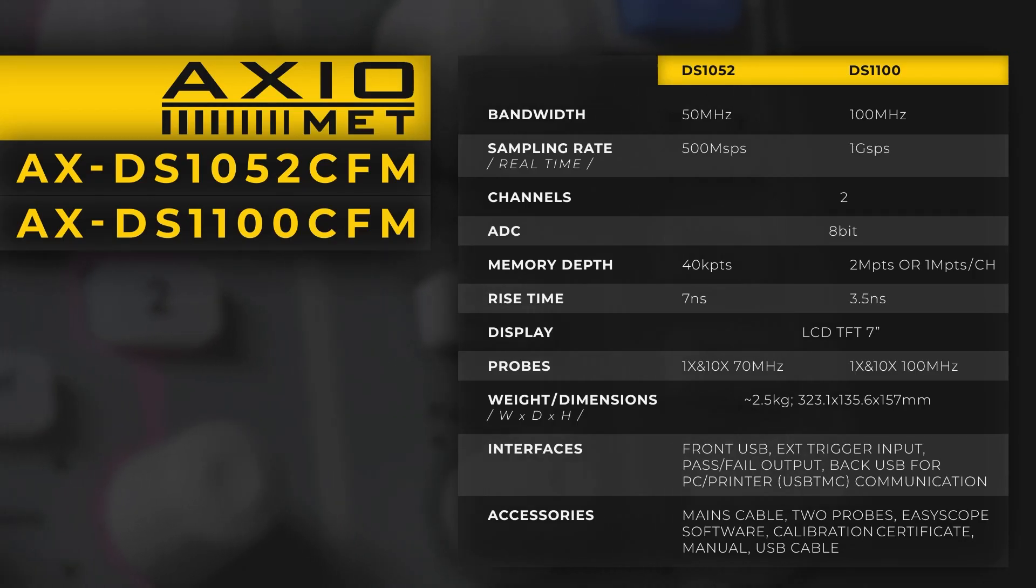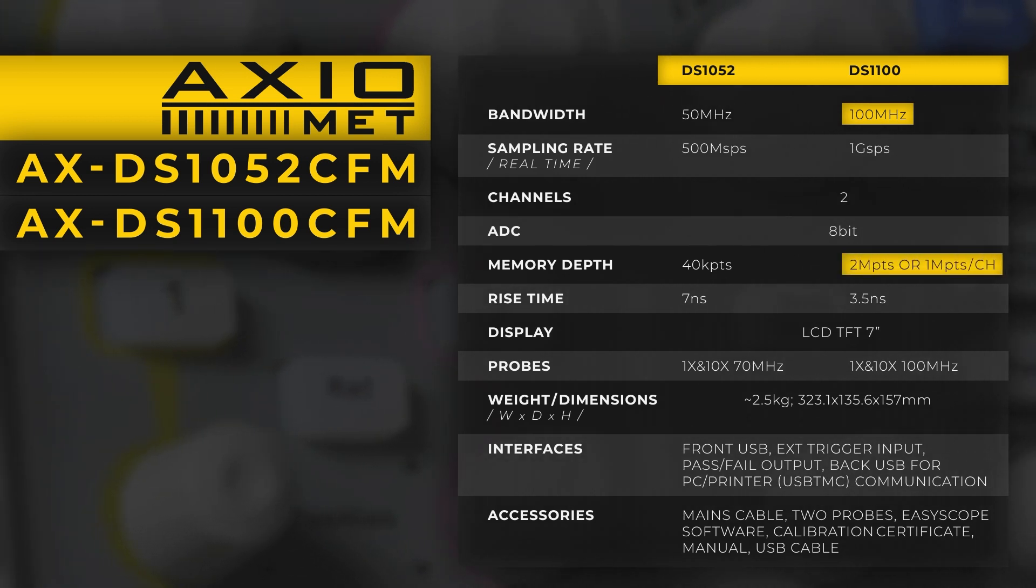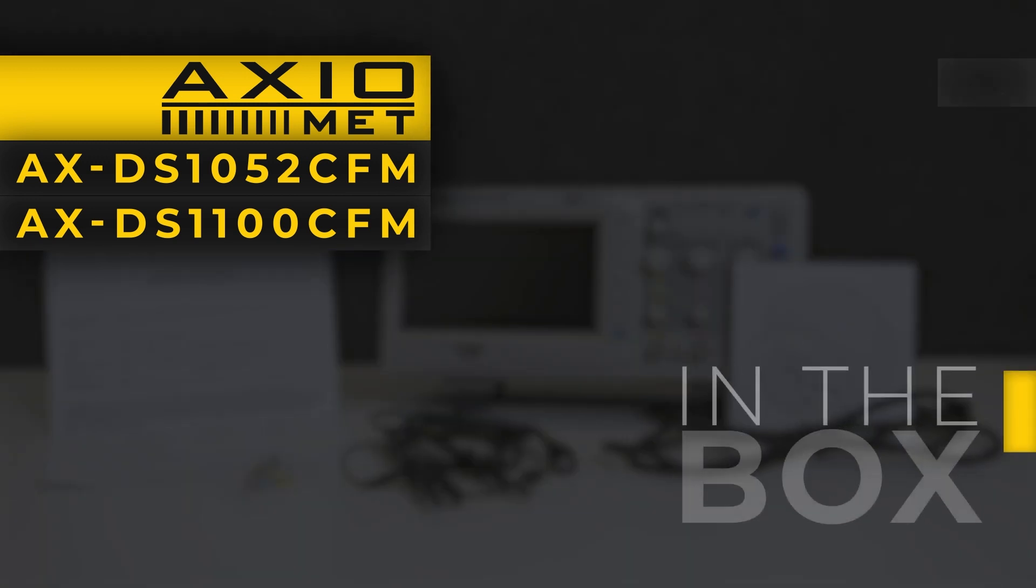However, the DS-1100 has a slight advantage with 100 MHz bandwidth, overall memory depth of 2 megapoints, and sampling rate of 1 gigasample per second. Both come with a manual,